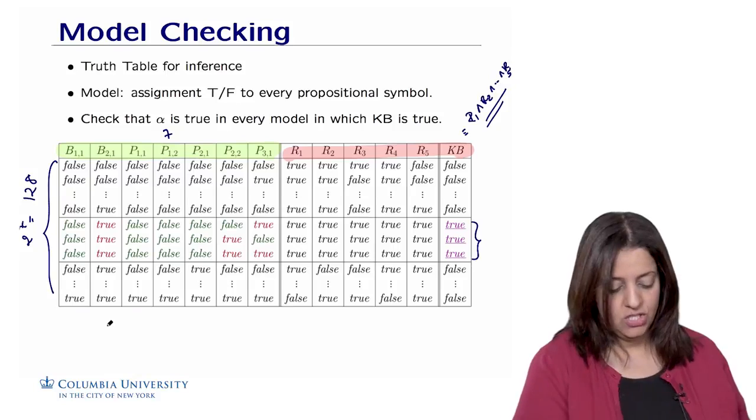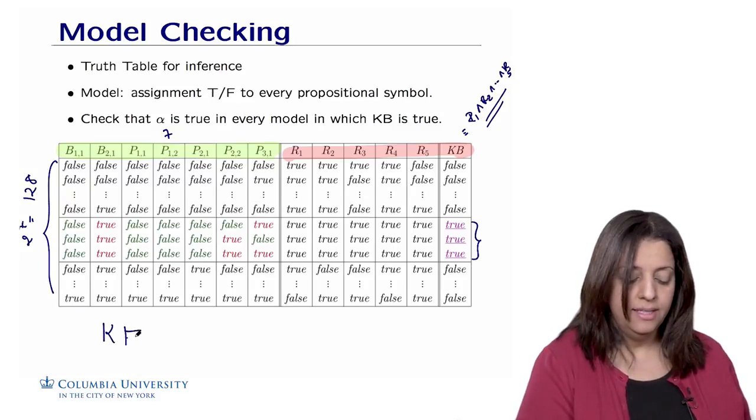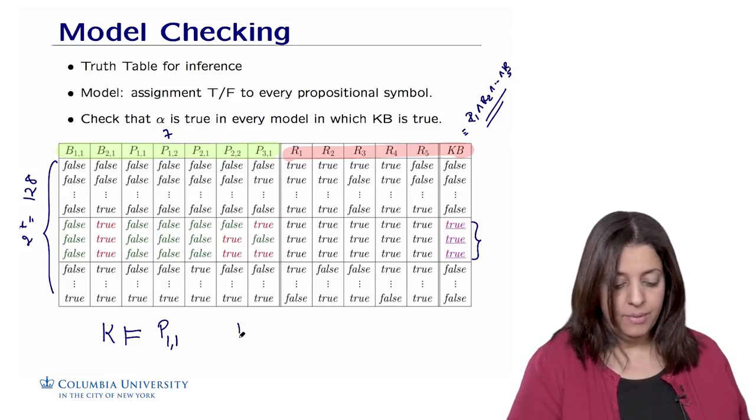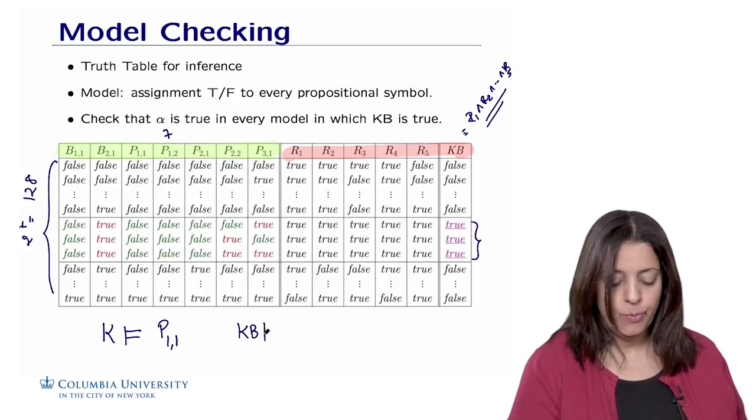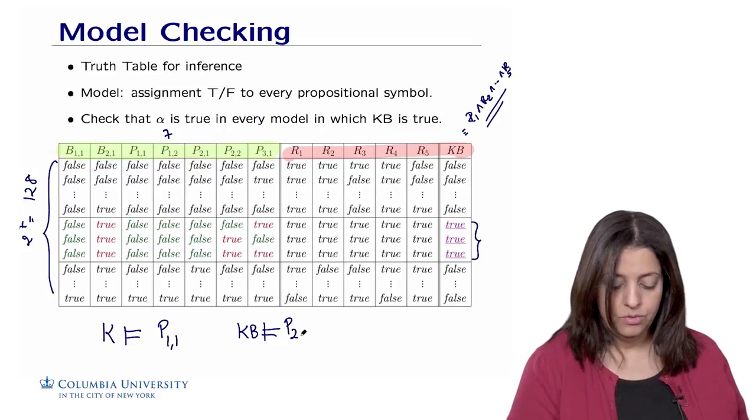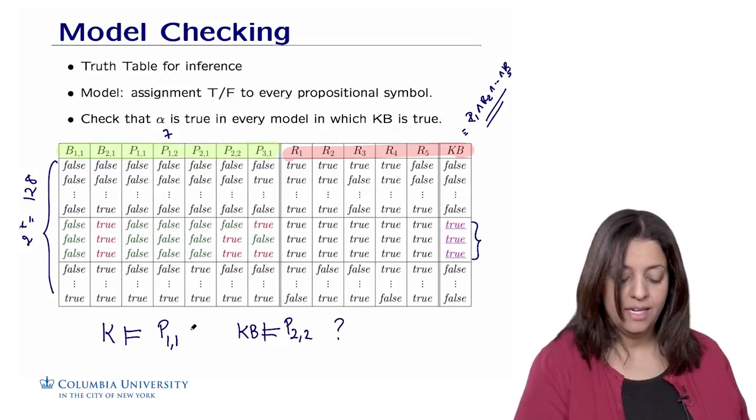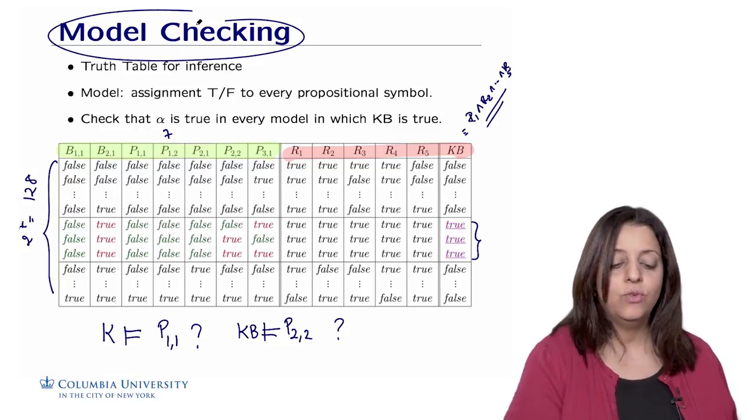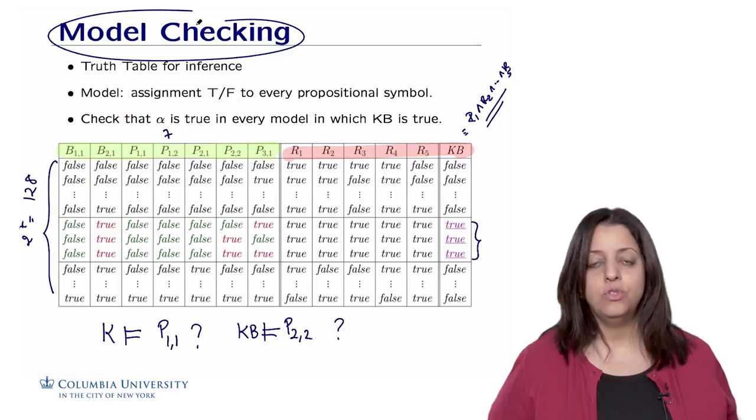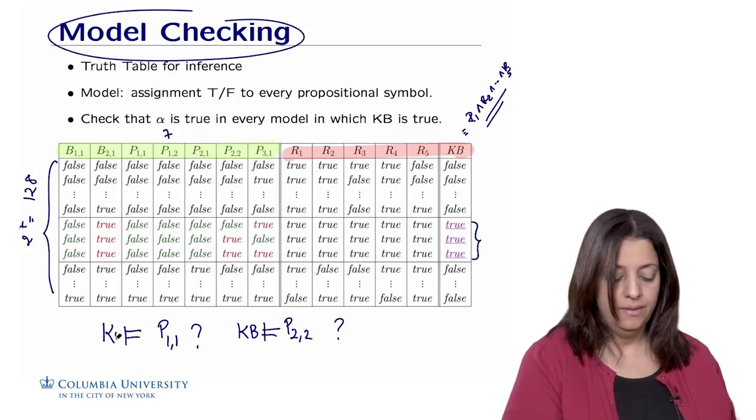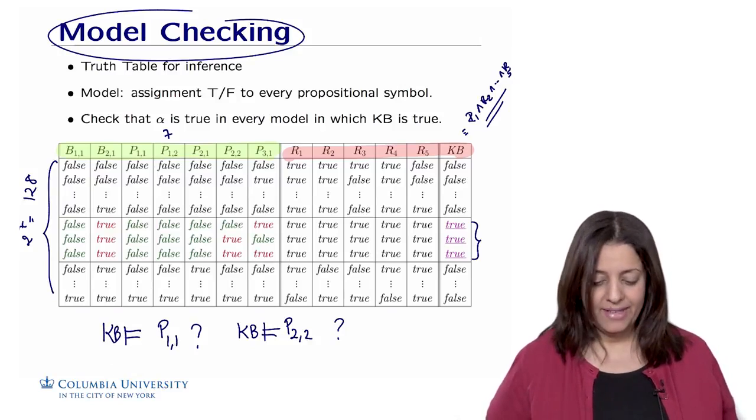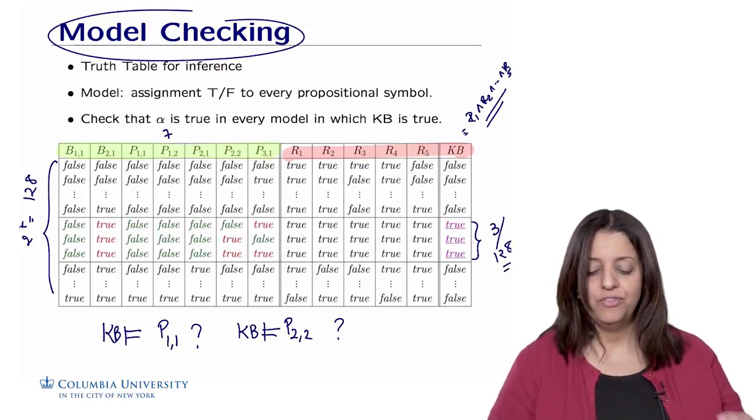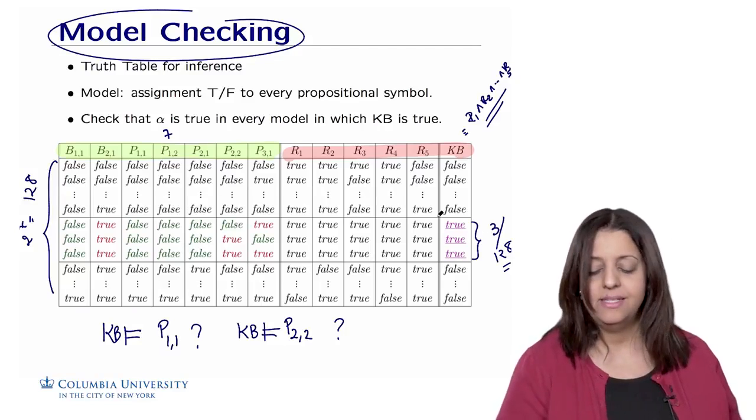We're going to focus on these three lines here in which the knowledge base is true. Remember, we wanted to answer questions such as: does KB entail the proposition p11? Does KB entail the proposition p22? We want to use model checking to actually check the truth value of p11 whenever KB is actually true. KB is true in three out of 128 possible rows, so we're going to focus on these three rows here.